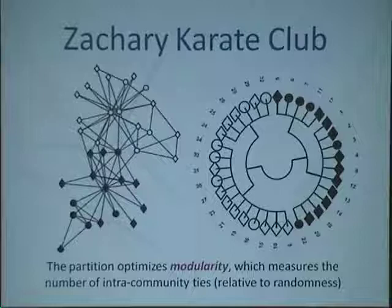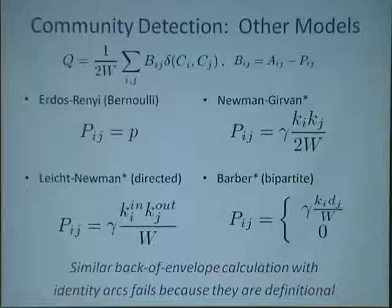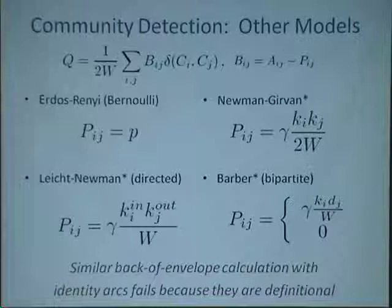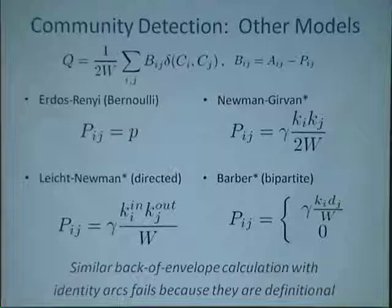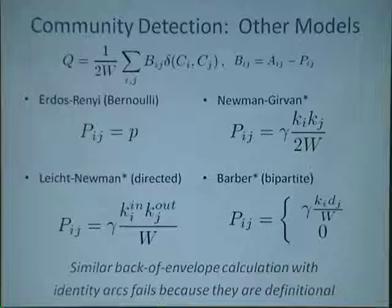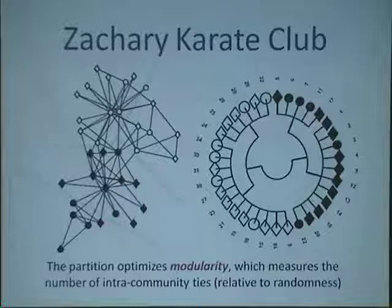If you have a tripartite network — say red, blue, and green nodes — with only red-blue and blue-green connections, you extend the logic: your null model has to forbid red-red, blue-blue, and green-green connections, and you separately count the degrees of blue, red, and green nodes. These are all in the NP-hard class to begin with, but luckily there are a lot of good heuristics that seem to do a very good job.